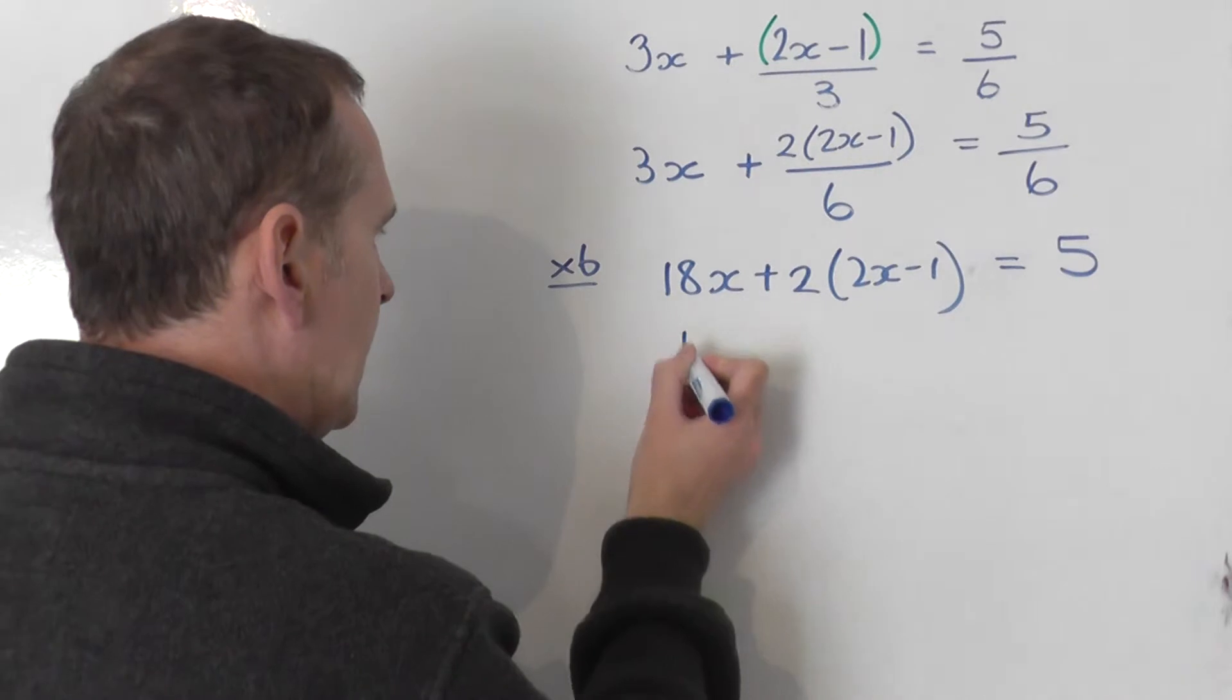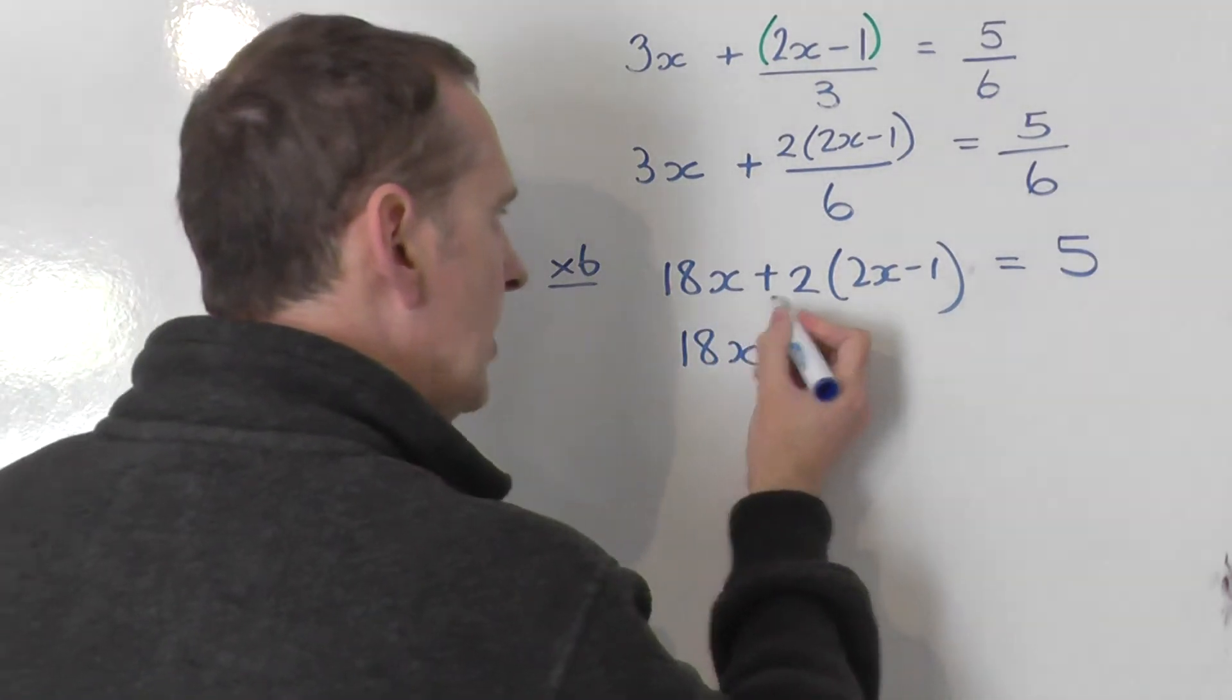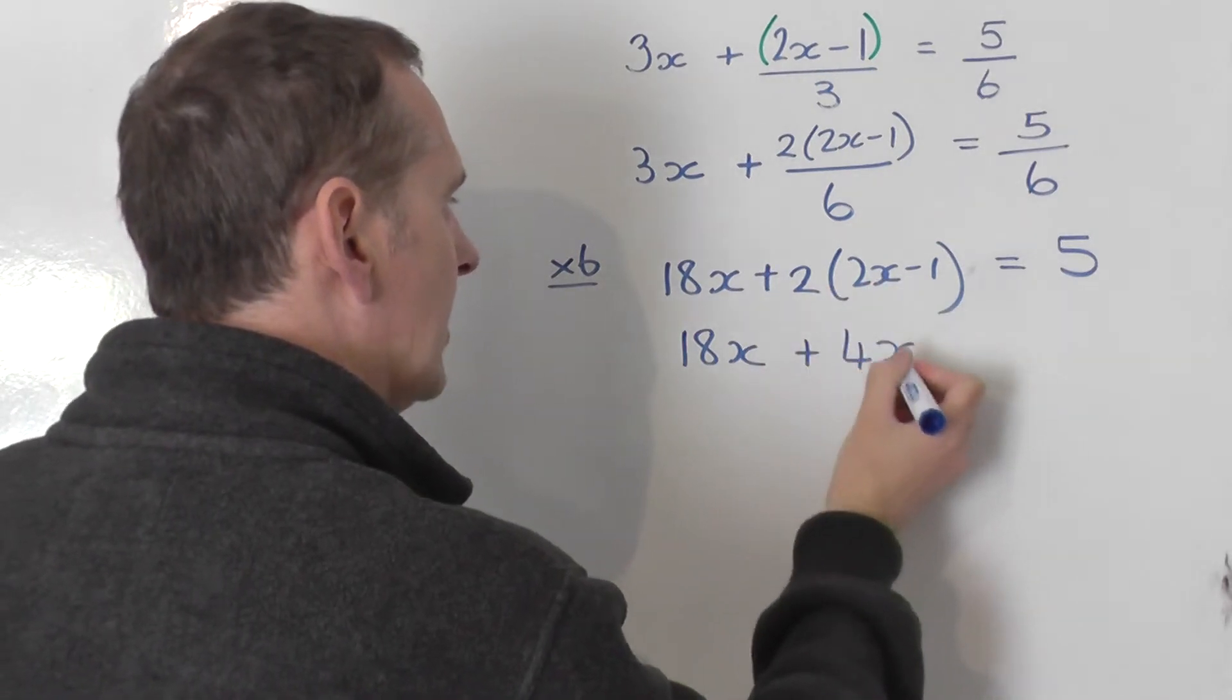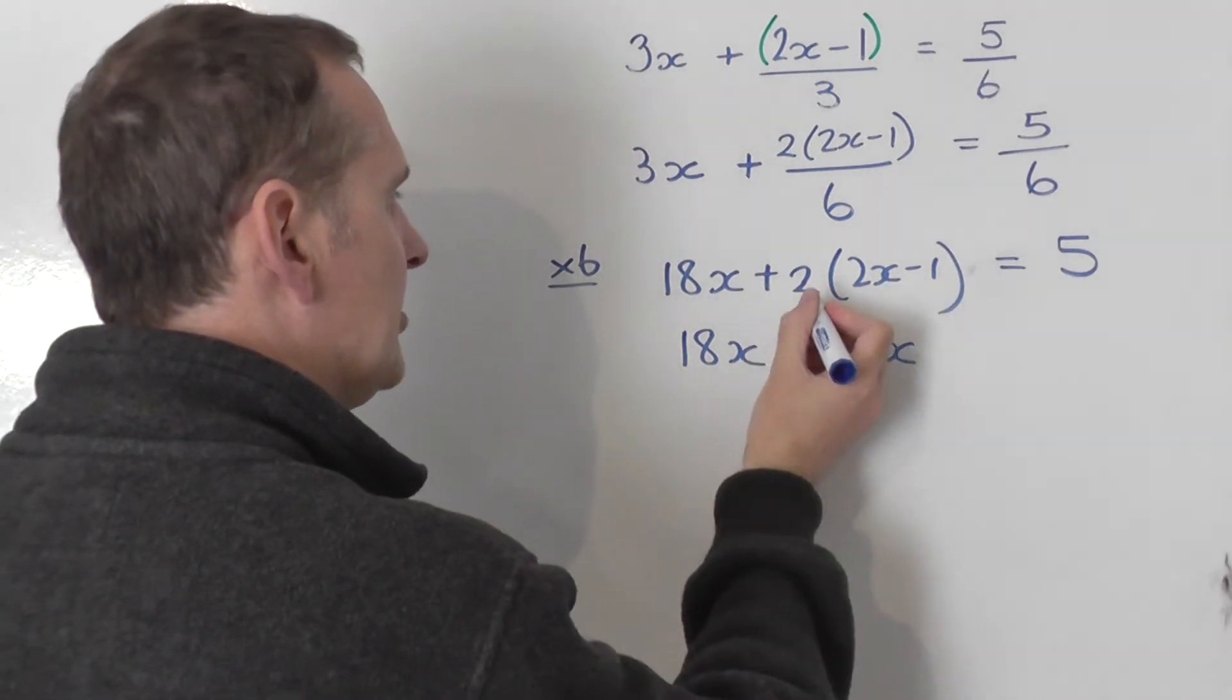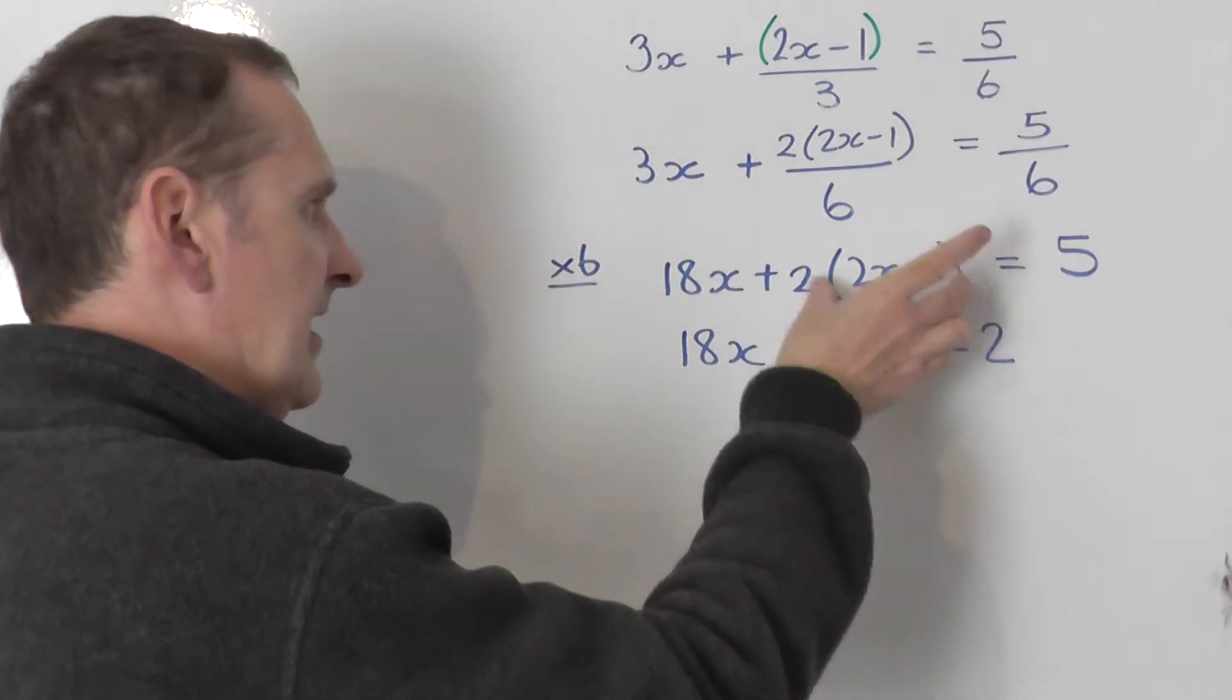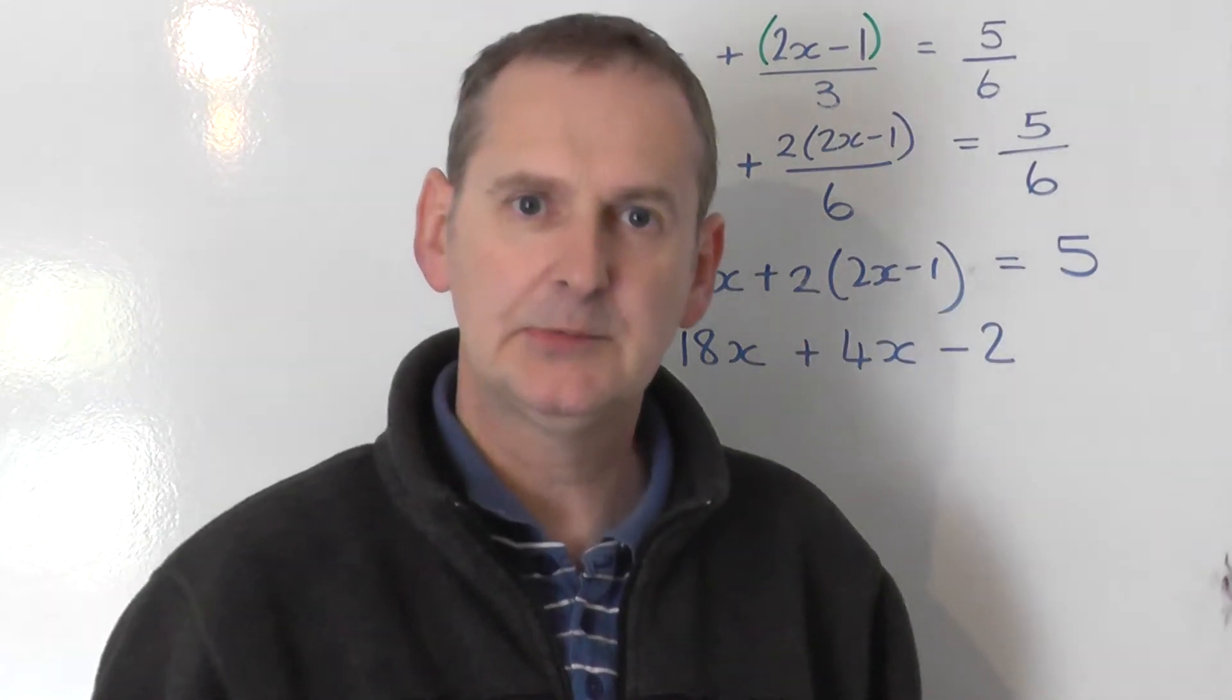I'm going to leave the 18x unchanged, not changing that in this line. And I'm just going to multiply out the bracket. Plus 2 times 2x is plus 4x. And then plus 2 times minus 1 is negative 2. So that thing there is the same as that, but there's no bracket present. I've got rid of the bracket.